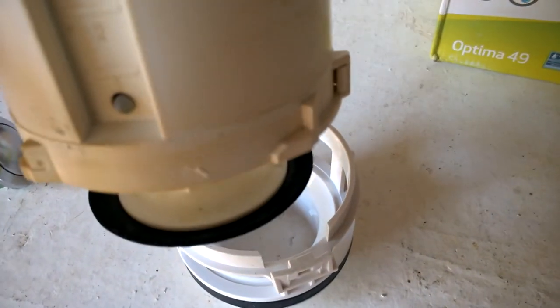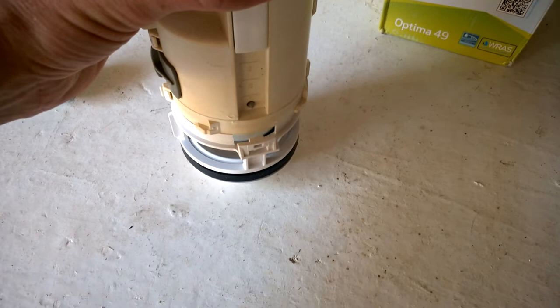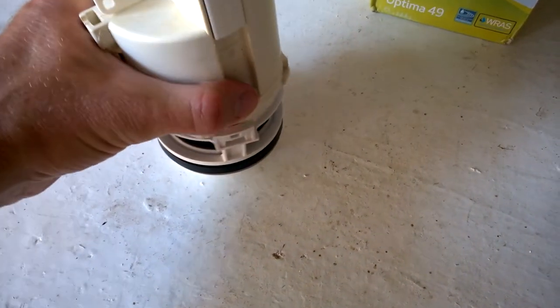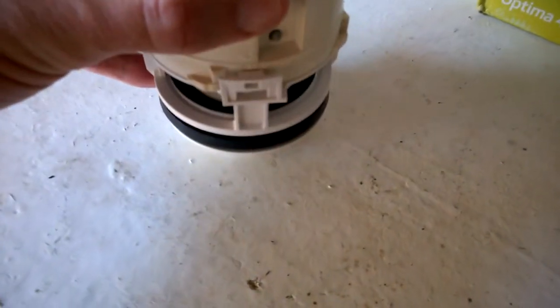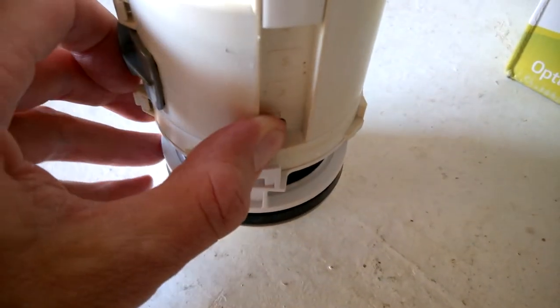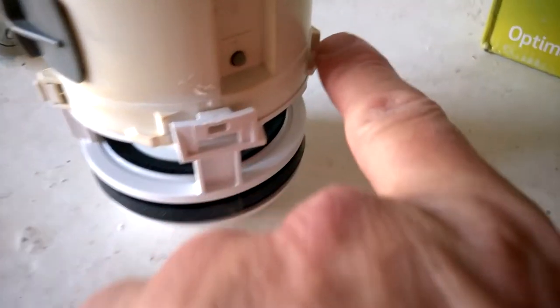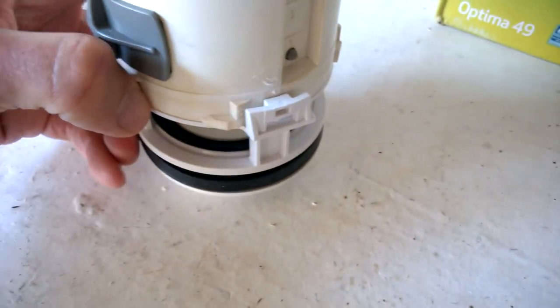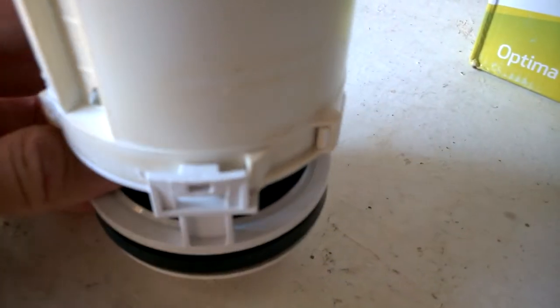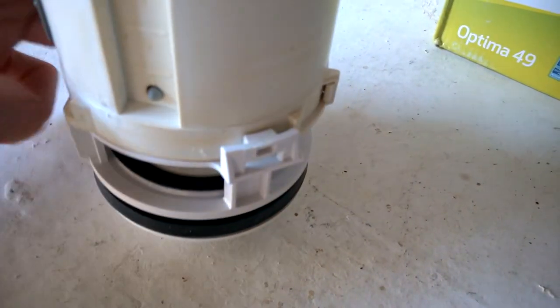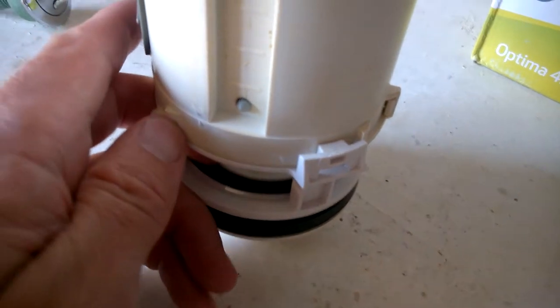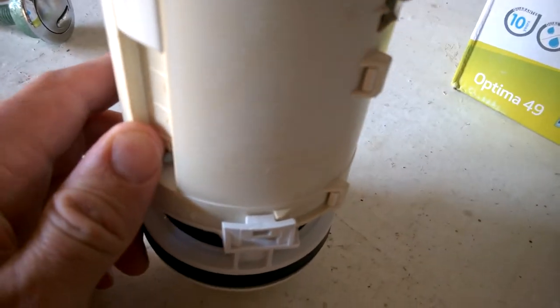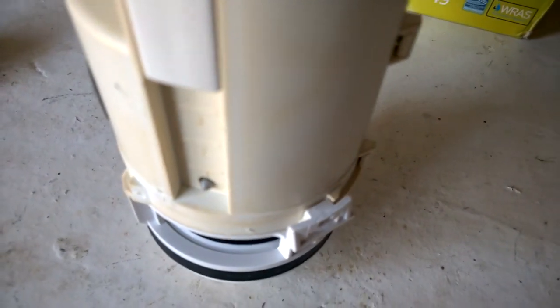As you can see just here, we've got some lugs and they sit into the cradle. You'll push the whole mechanism down like so. And once it's seated, you'll do a turn clockwise, about a quarter of a turn or so, until this lug goes into this section here. So that's how it will be fully assembled within the toilet.